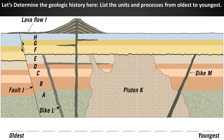Let's determine the geologic history here. List the units and processes from oldest to youngest and consider the basic principles geologists use for relative time: the principle of superposition, cross-cutting relations, the principle of original horizontality, the three types of unconformities, and the principle of lateral continuity. Write down your interpretation of the geologic history based upon these principles as they apply to the drawing. Pause the video until you complete this exercise — you will likely need more time than the 15-second break provided. It sometimes helps to start with what you think is the youngest and oldest.